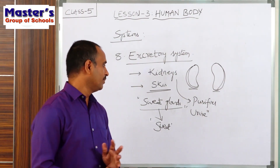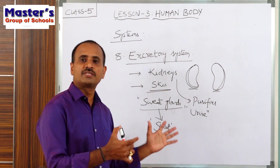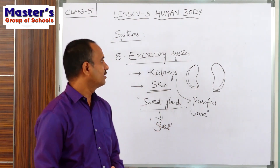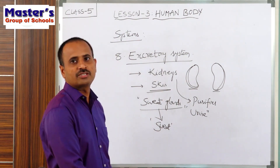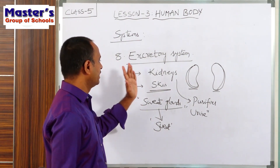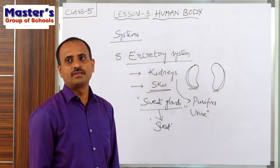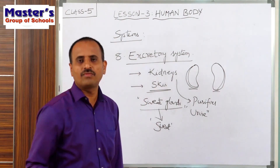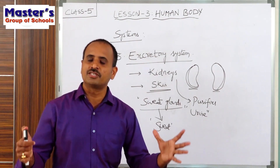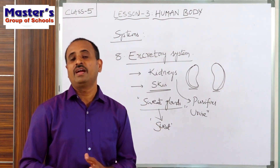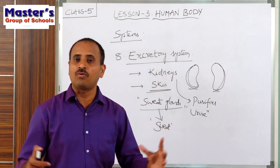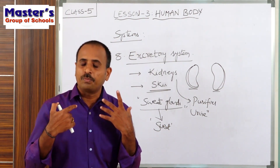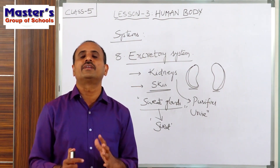We have to drink more water every day so that the waste materials will be sent out in the form of urine and sweat. This is about the excretory system and its parts - the pores, kidneys, and skin. These are the various systems present in our body. All these systems work together, help each other, and coordinate with each other to help our body perform our regular activities.